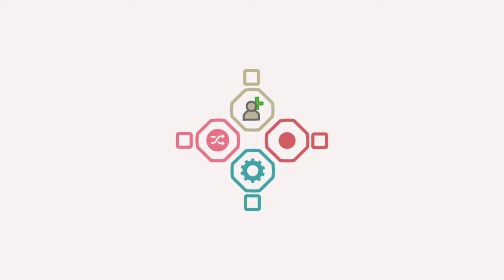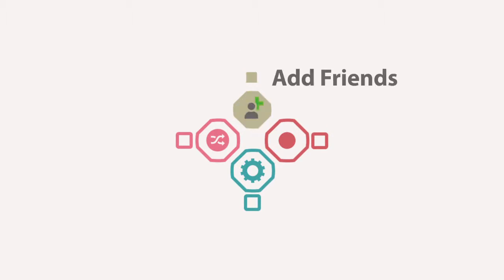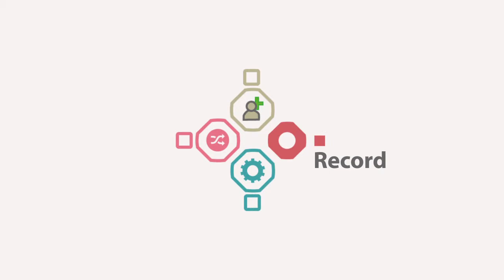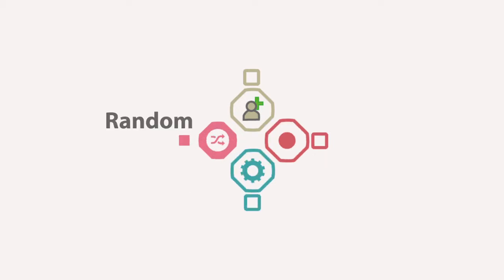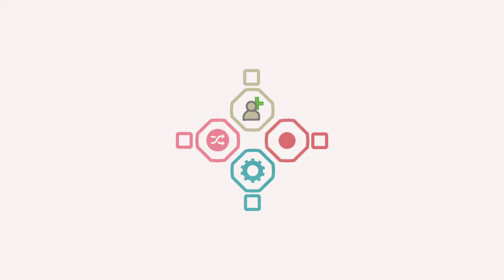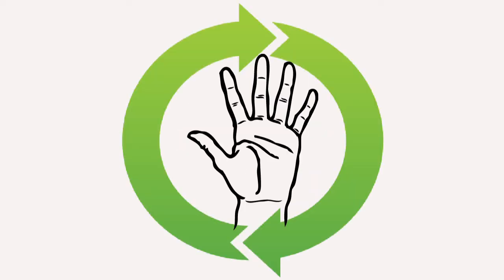The Box is operated by this widget. You can add friends, record interactions between two people, access the Box settings and activate random mode. Just raise your right fist, select the function with your left hand and close that fist or swipe to activate.